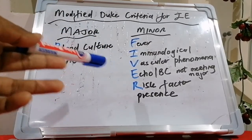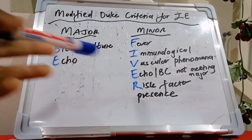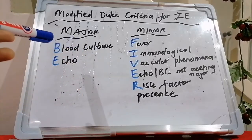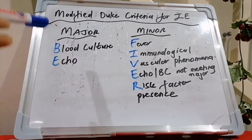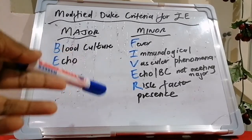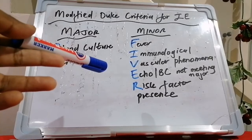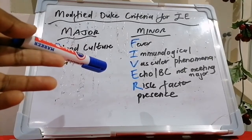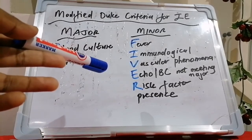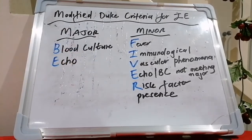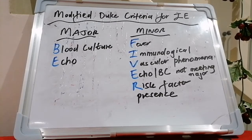E refers to echo and echocardiographic criteria which do not meet the definition for the major criteria. R refers to risk factor presence, typically the use of IV drugs.